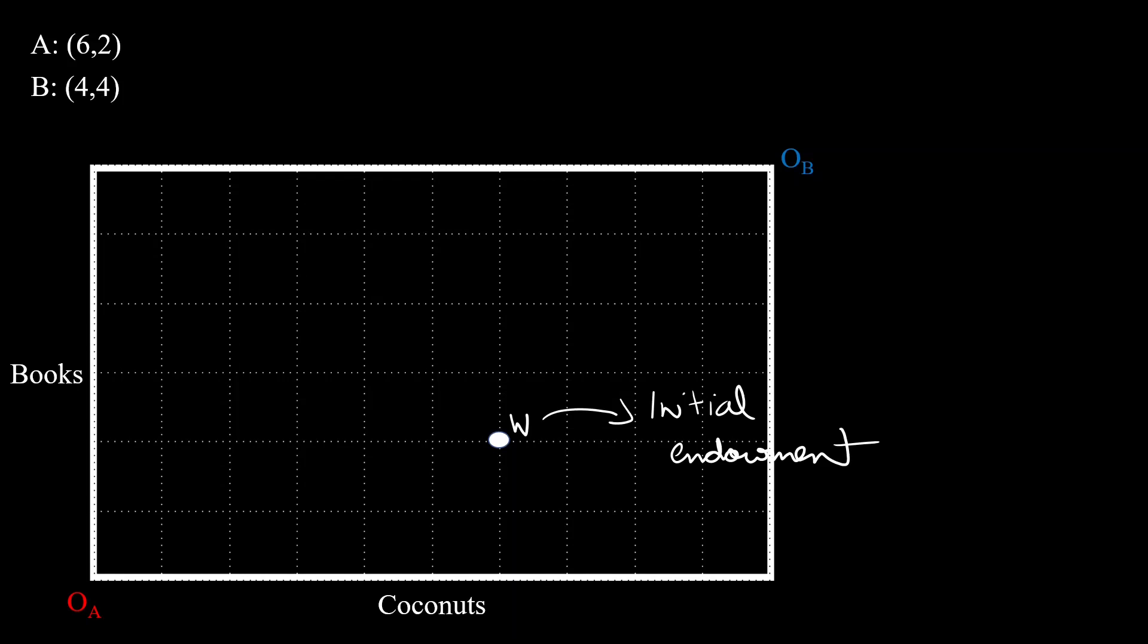Now, let's say that the third person comes in and the prices are set for these goods at one dollar per coconut and two dollars per book. To set up its budget line, we first need its slope. That will just be the negative of price of coconuts divided by the price of books, which in this case is minus 1 by 2.